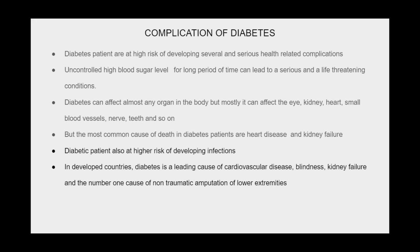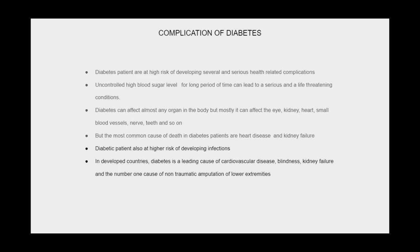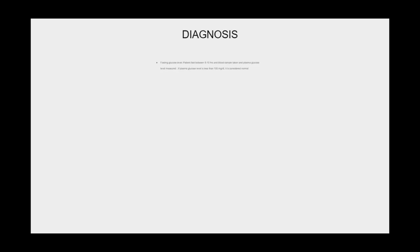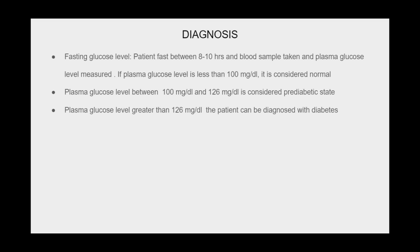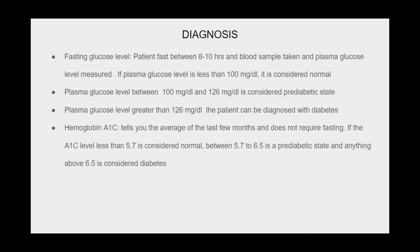For diagnosis, the fasting glucose test requires the patient to fast for 8 to 10 hours before a blood sample is taken and plasma glucose is measured. A plasma glucose level less than 100 mg/dL is considered normal; between 100 and 126 mg/dL is considered a pre-diabetic state; and greater than 126 mg/dL indicates a diabetes diagnosis. The hemoglobin A1c test reflects the average blood glucose over the last few months and does not require fasting. An A1c level less than 5.7% is considered normal, between 5.7% and 6.5% is pre-diabetic, and anything above 6.5% is considered diabetes.